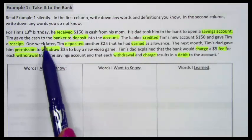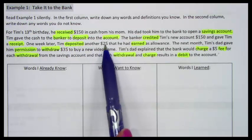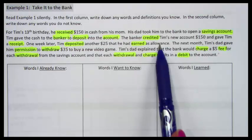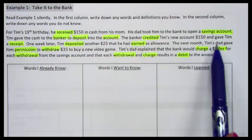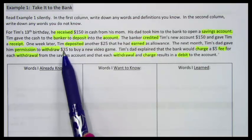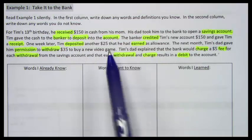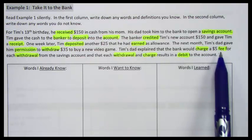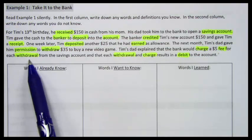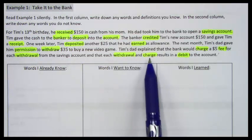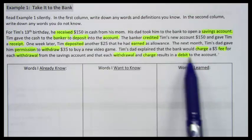One week later, Tim deposited another $25 that he had earned as allowance. The next month, Tim's dad gave him permission to withdraw $35 to buy a new video game. Tim's dad explained that the bank would charge a $5 fee for each withdrawal from the savings account and that each withdrawal and charge results in a debit to the account.